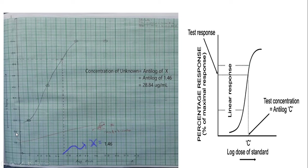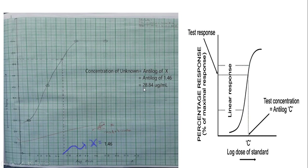Then, after plotting the dose response curve and the log dose response curve, the dose of the test drug which falls on the linear log dose response curve is interpolated from the dose response curve, and the value of C or X is obtained as shown in figure. The concentration of the unknown is equal to antilog of X, which means antilog of 1.46, and the answer of the unknown concentration is 28.84 microgram per ml.